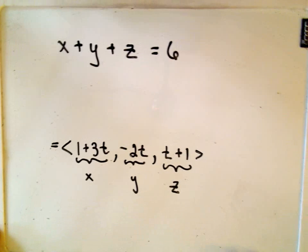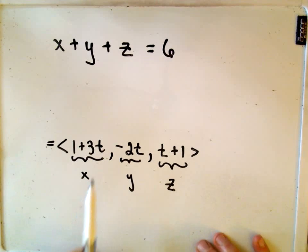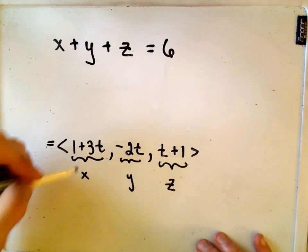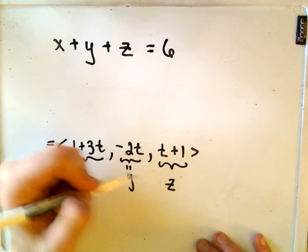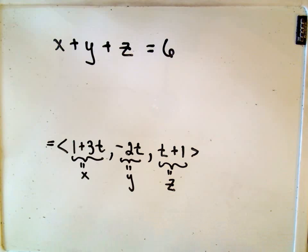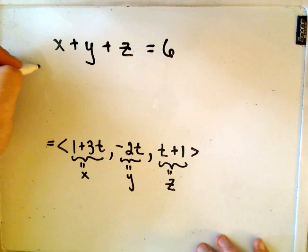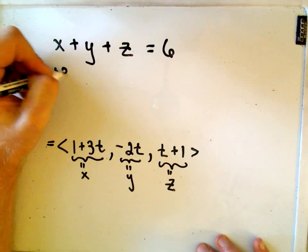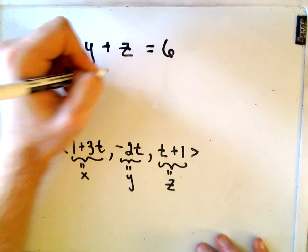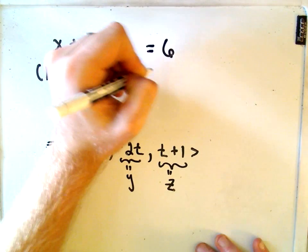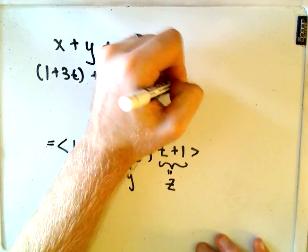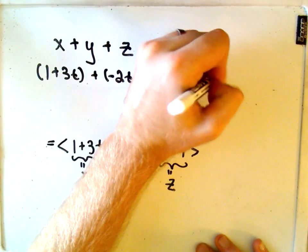And now all we have to do is simply substitute in our respective x, y, and z values. This will give us an equation involving only t, and then we'll figure out t. So we would get (1 + 3t) + (-2t) + (t + 1) = 6.